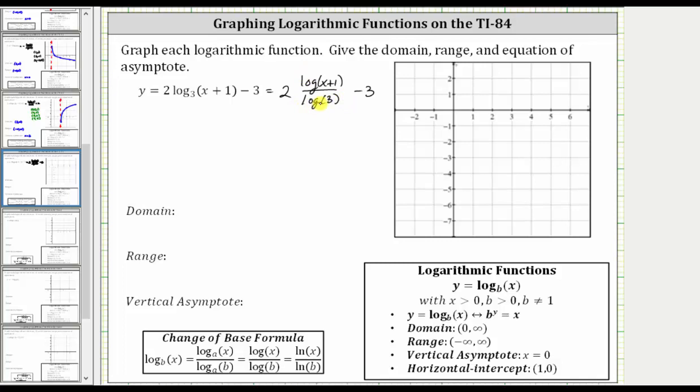And now before we go to the calculator, let's find the domain, range, and vertical asymptote. Remember, for the basic log function in this form, x has to be greater than zero, but in our case, because we have log base three of x plus one, x plus one must be greater than zero.